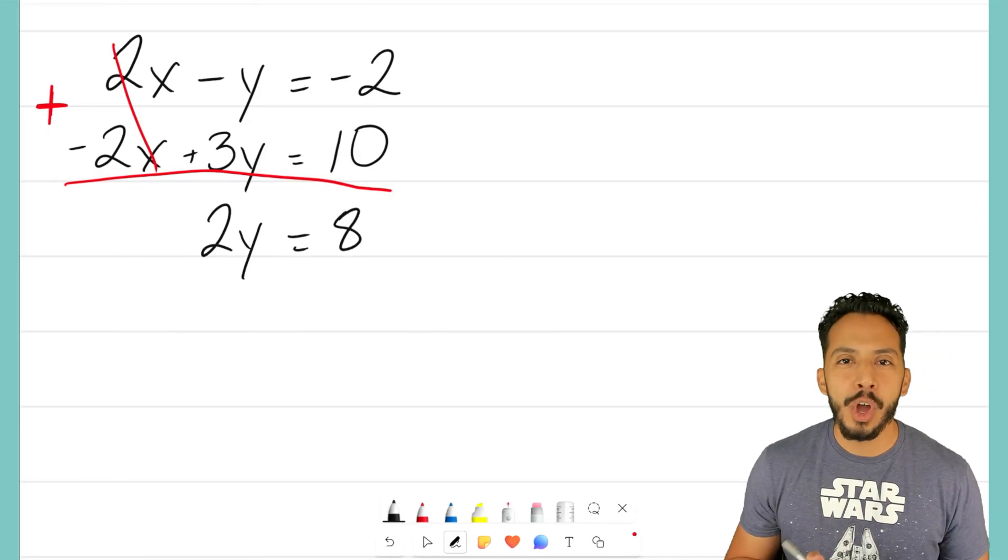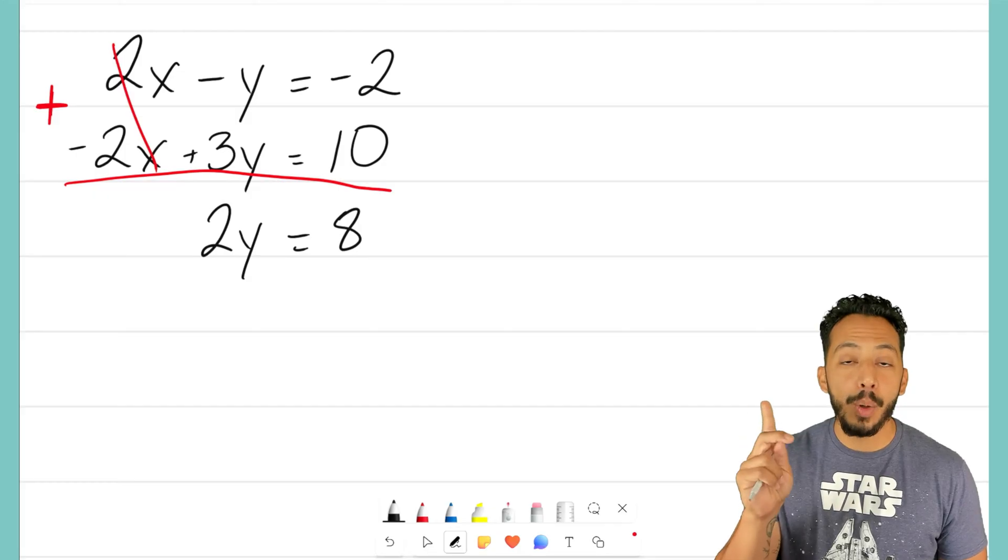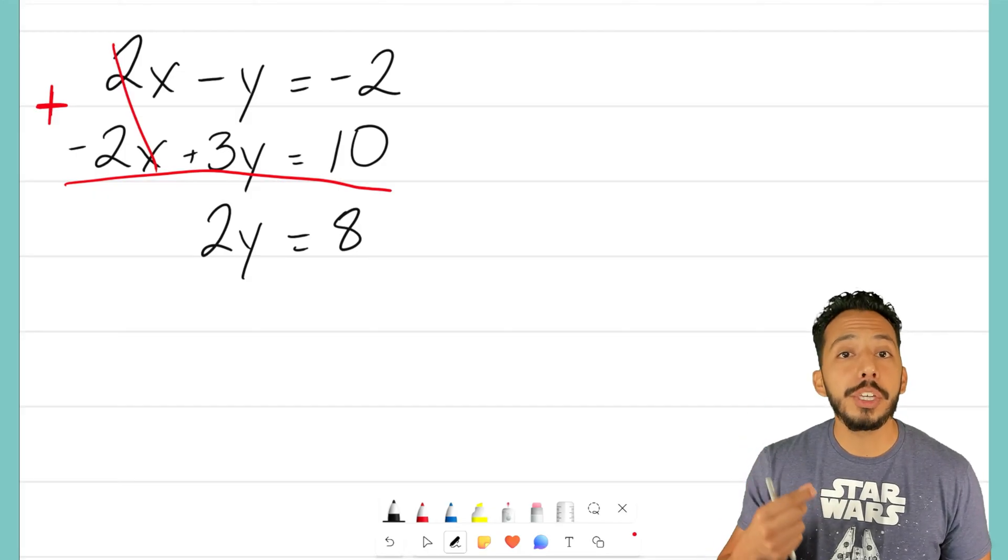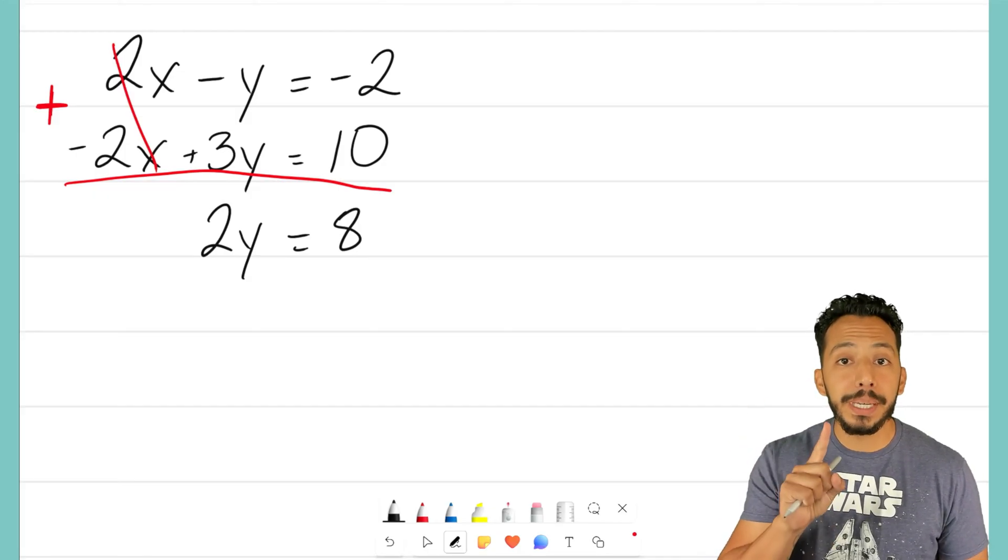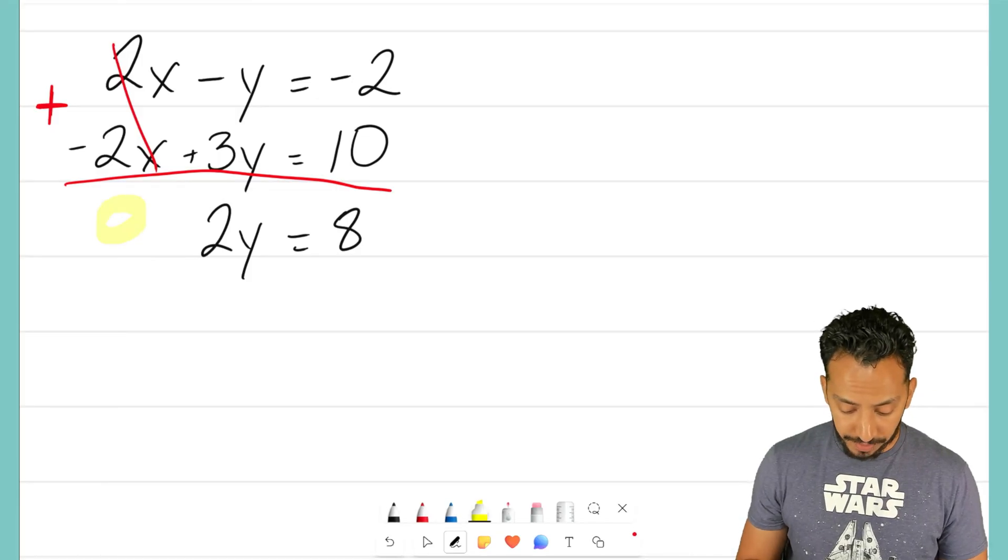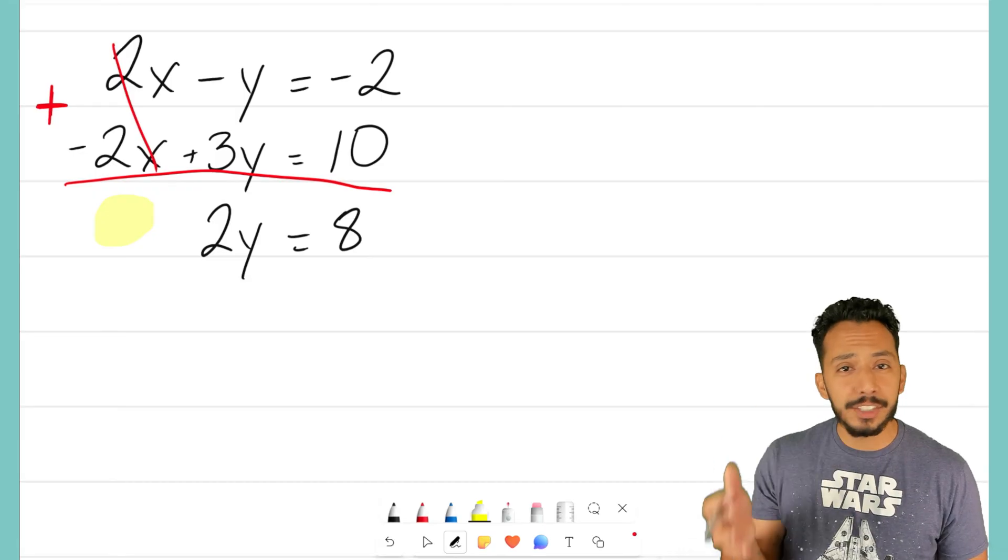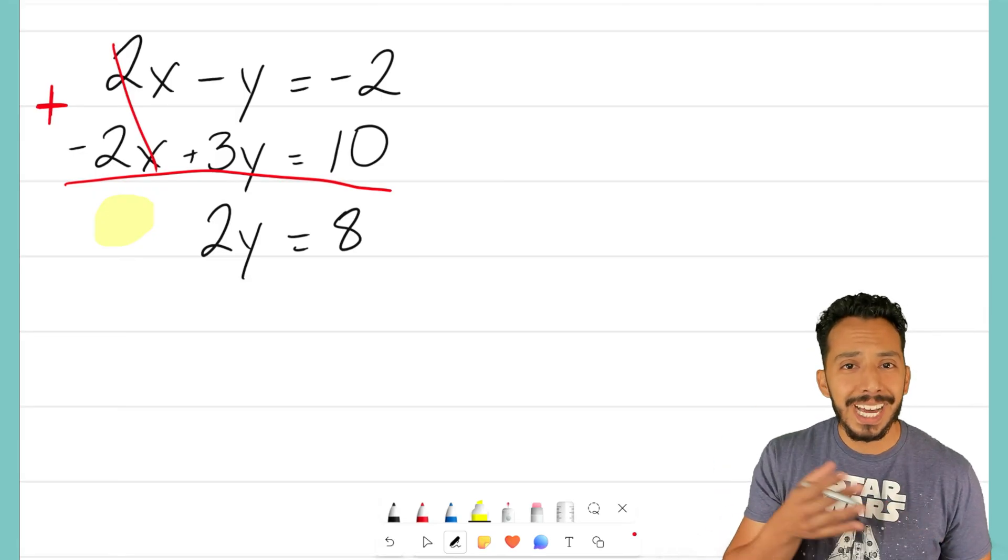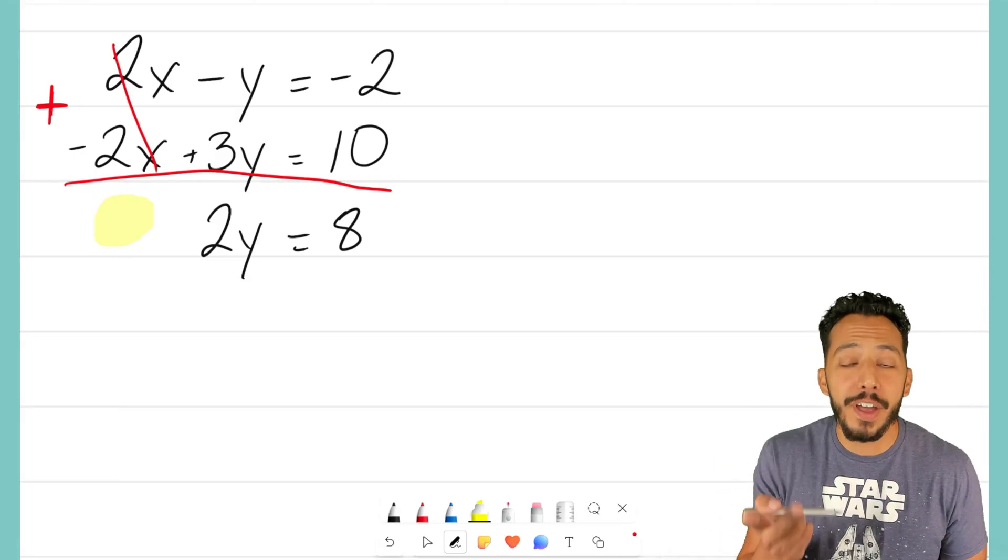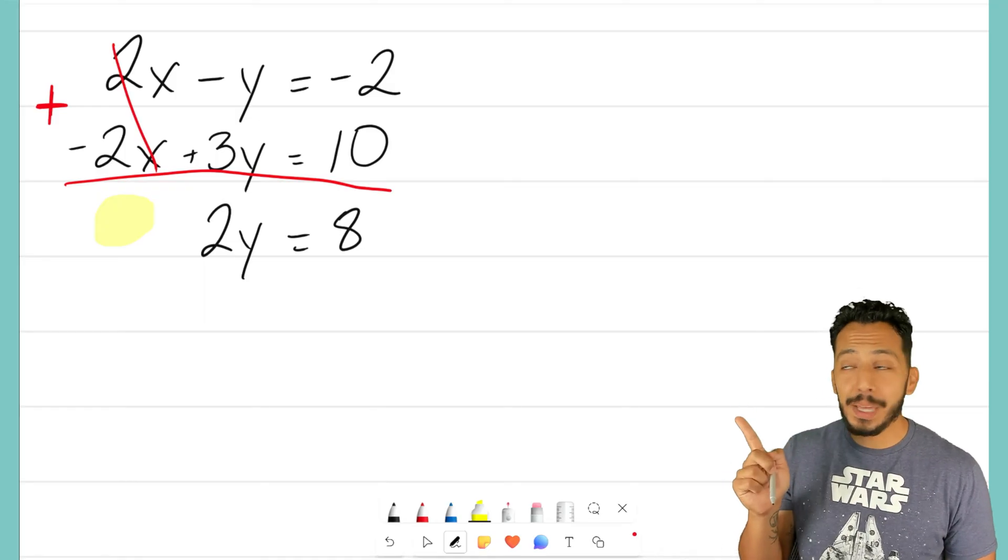So, look what we just did. We took two equations and combined them into one using the elimination method, because this is the big part of this. The x variable drops out. Our goal is to solve for x or solve for y. I can't do that if I have two variables in one equation. Since they both dropped out, we can now solve this, and this is a one-step equation.